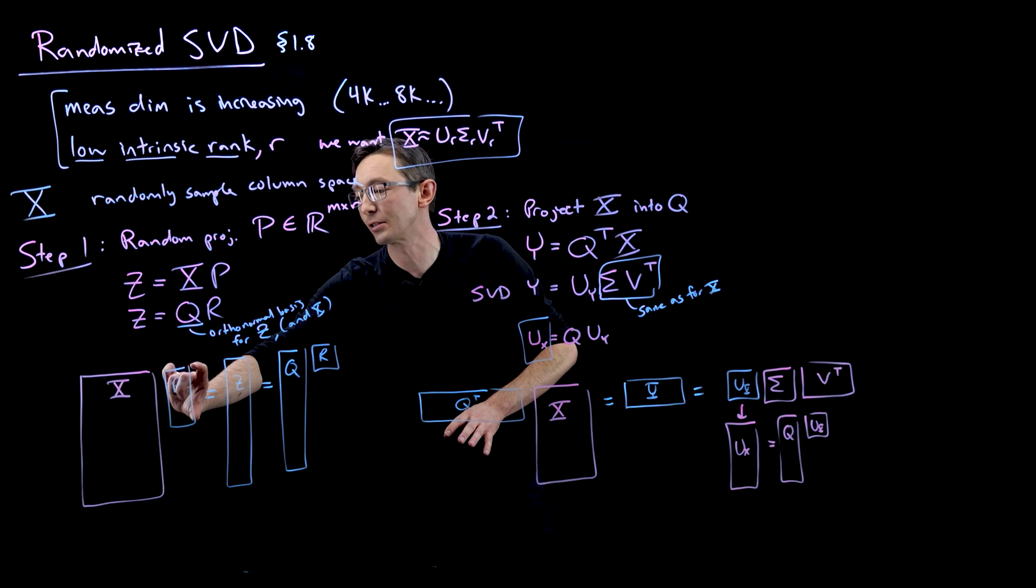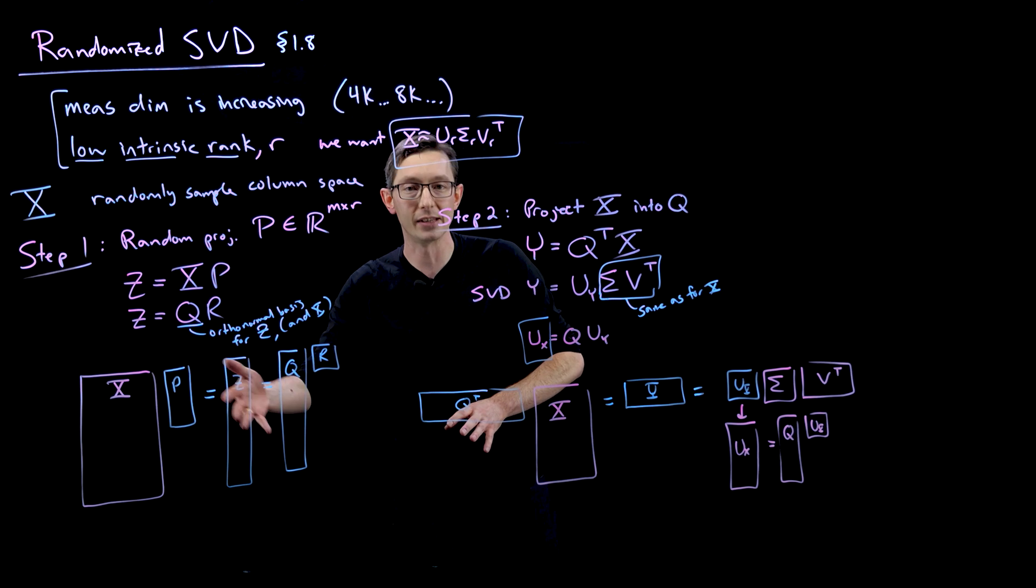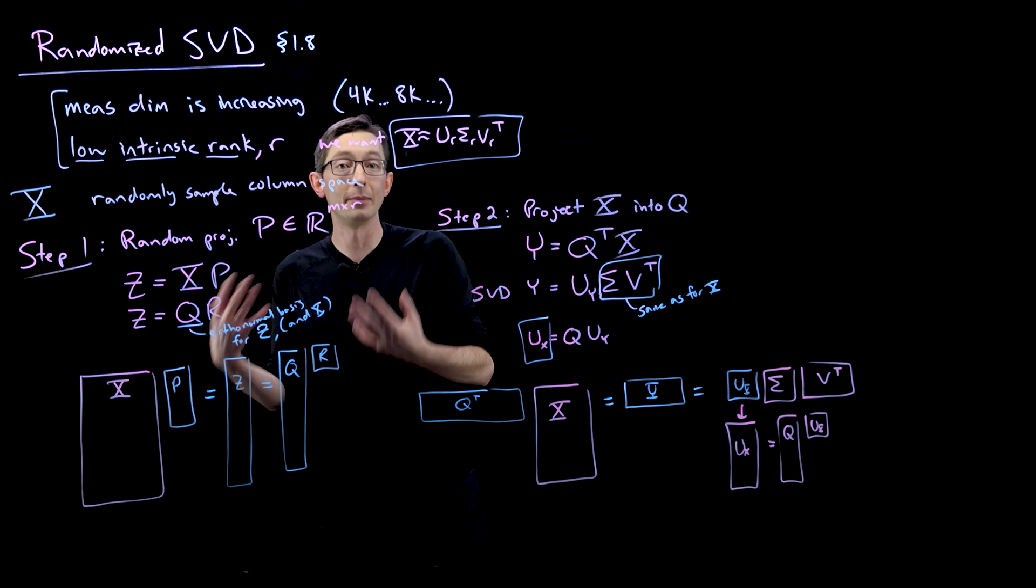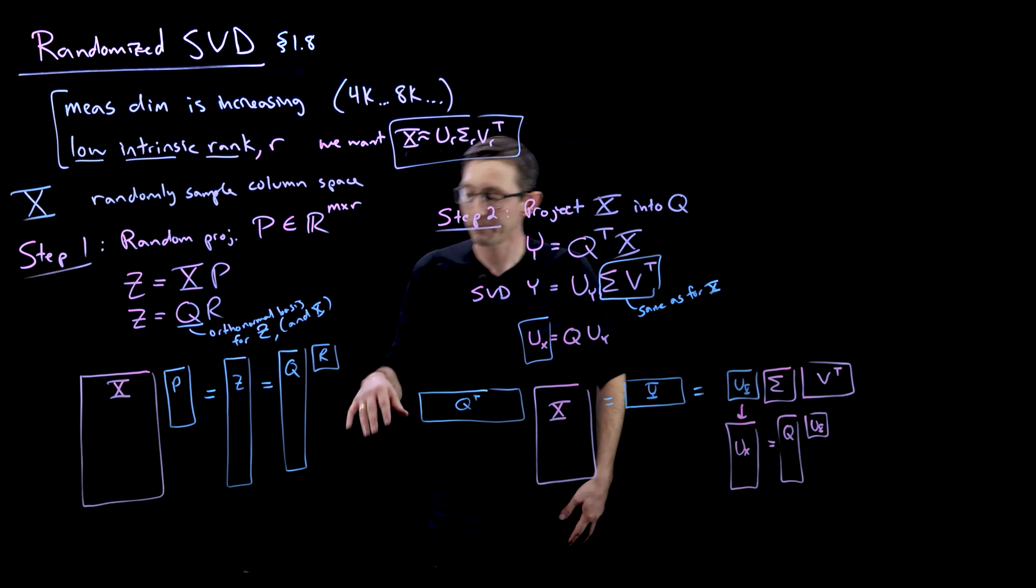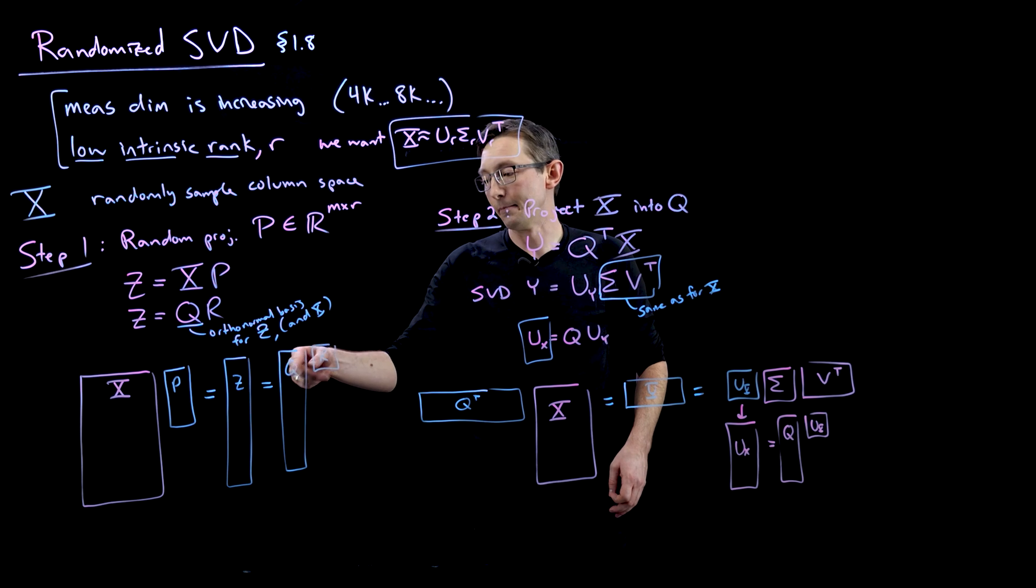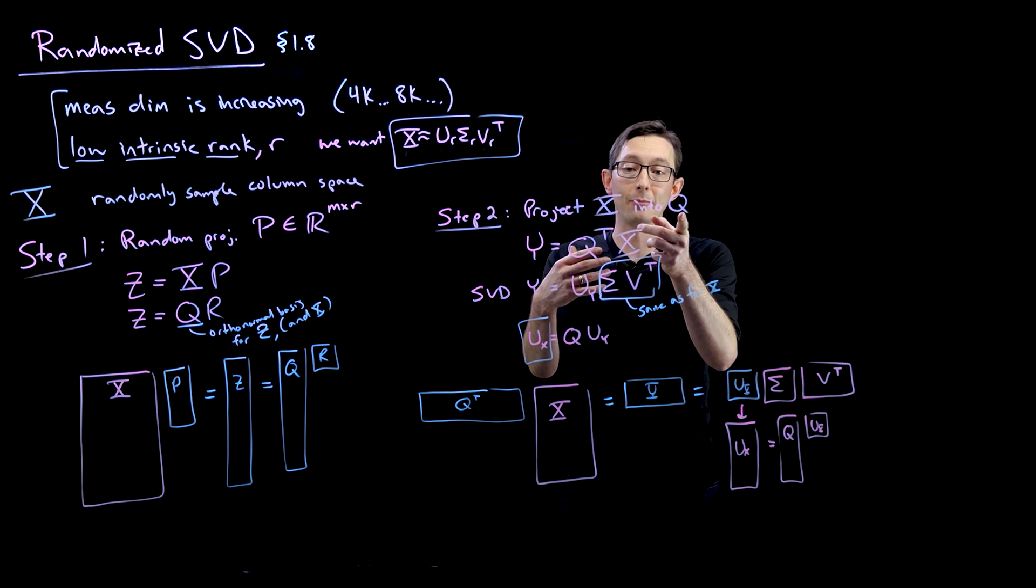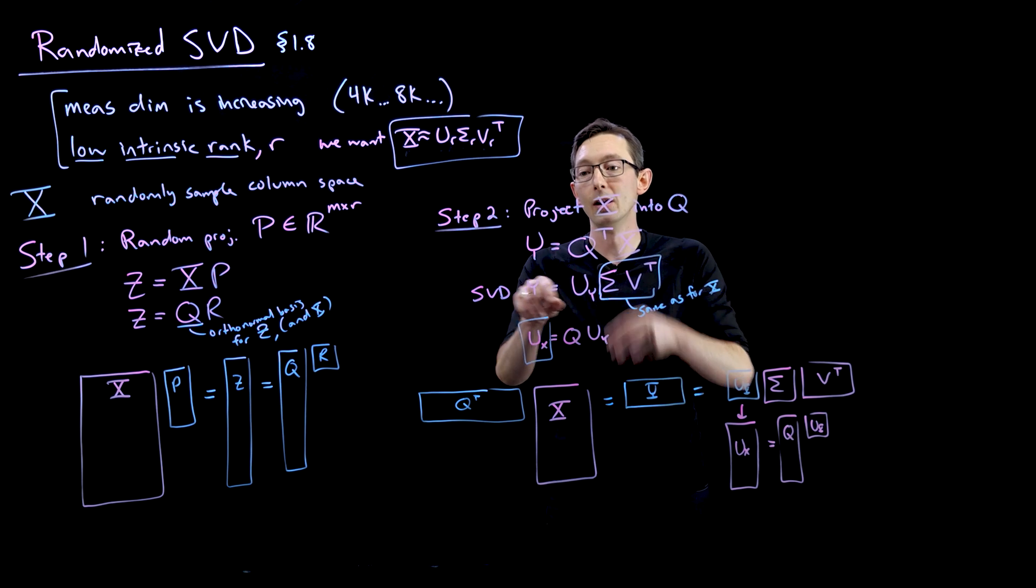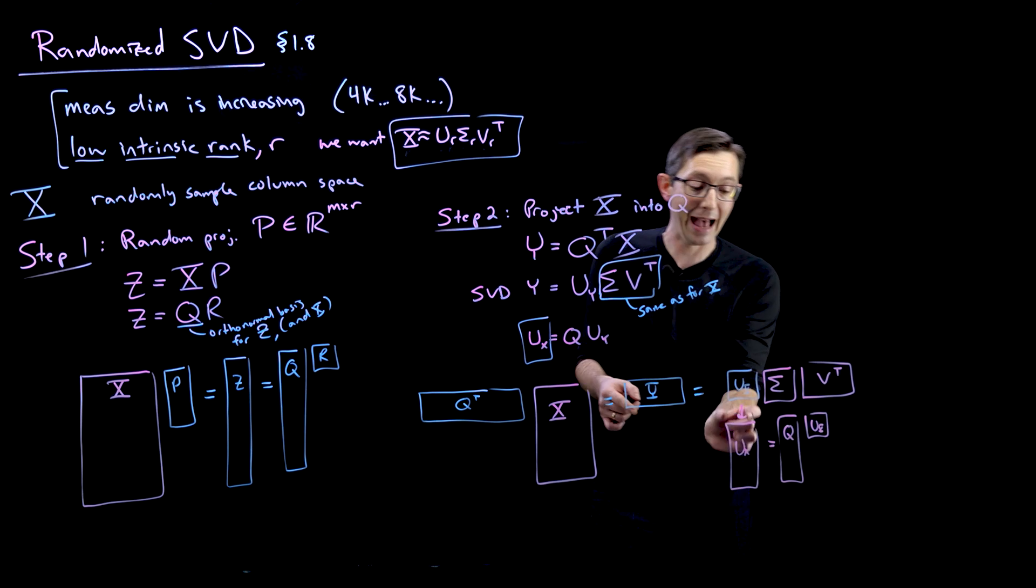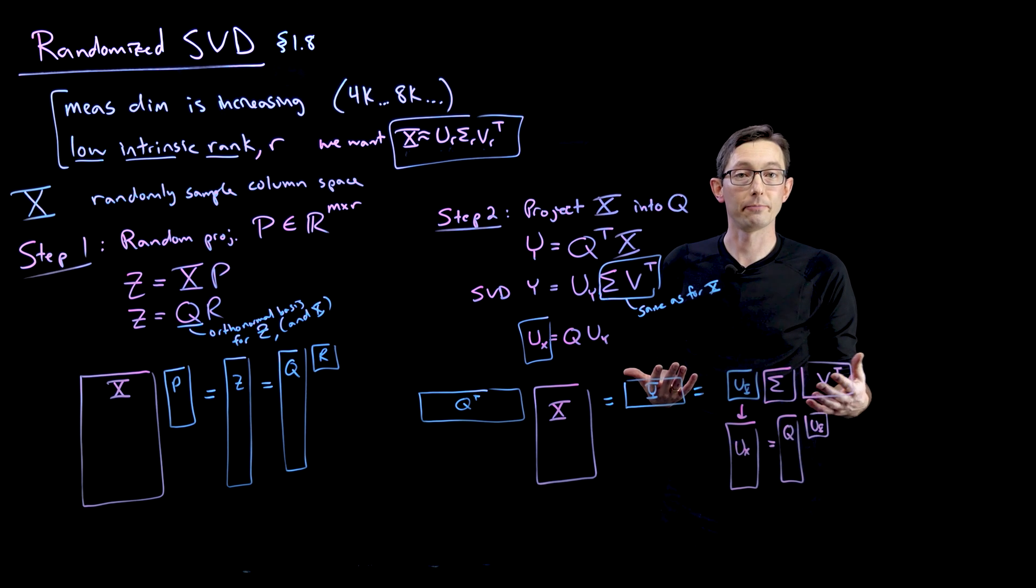I can get away with massive reduction in computation and still accurately estimate that rank R singular value decomposition by first taking a random projection matrix P to go down to a low dimensional space that should probabilistically have the same rough column space as X, the same dominant column space as U_R and as X. I can then find an orthonormal representation using this QR factorization. And then I can work entirely in that basis given by Q. I can project X into Q to get Y. I can compute the SVD there. And then I can lift those singular vectors back up to the high dimensional space and approximate the quantities that I actually want.